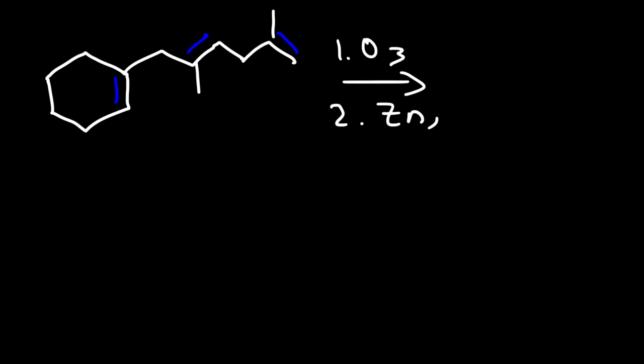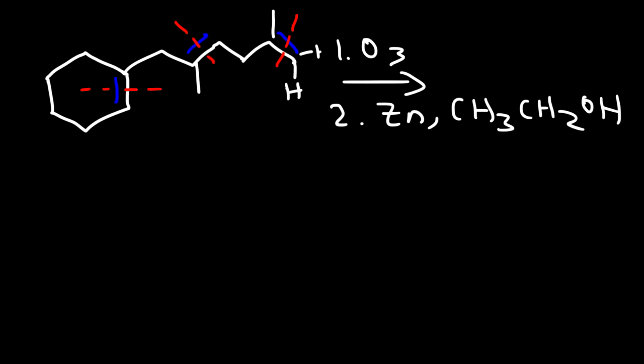Now let's try another example. Let's say we have a double bond here, another one here, and here as well. We'll use ozone again, and this time zinc and acetic acid. Go ahead and predict all the products that can be formed. Everywhere we see a double bond, we need to split it into two parts. Keep in mind there are two hydrogens on this carbon atom, and a hydrogen here and another one there. It's always good to place those hydrogen atoms to tell if you're going to get an aldehyde or a ketone.